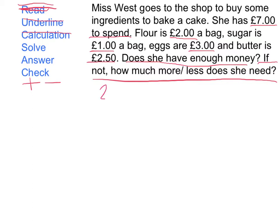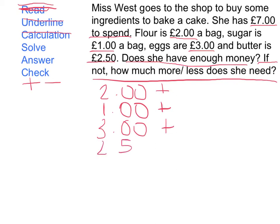First we're going to add together two pounds for the flour, one pound for the sugar, three pounds for the eggs, and two pound fifty for the butter. You might decide you want to do this in different steps, but I've chosen to keep this nice and simple. So two, three, four, five, six, seven, eight — altogether that comes to eight pound fifty.